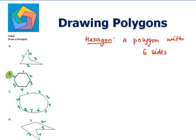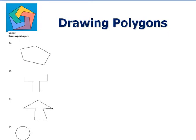Next problem. Solve. Draw a pentagon. A pentagon is a polygon with five sides. Let us count the number of sides in each figure.